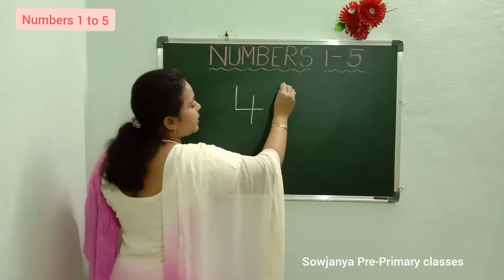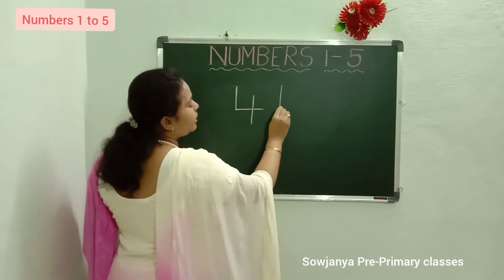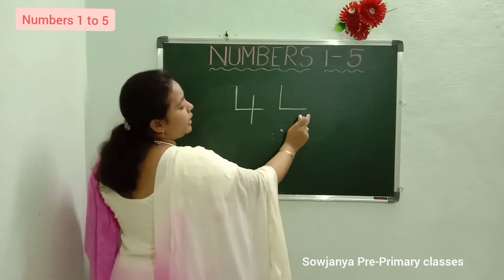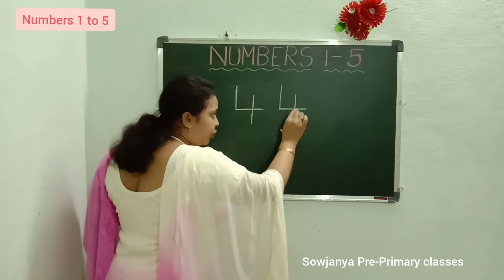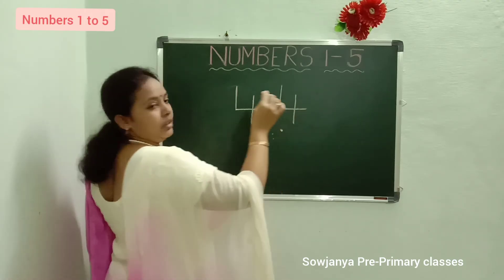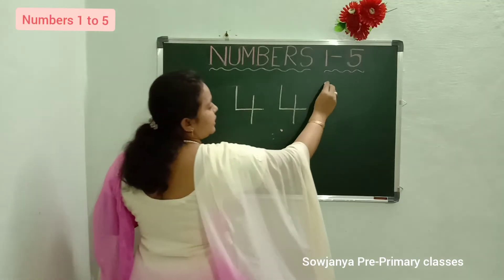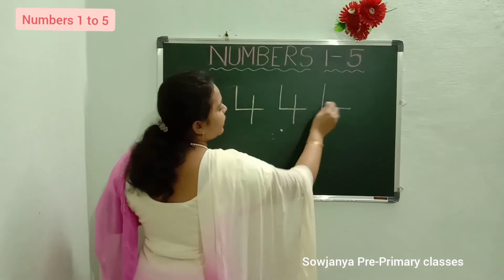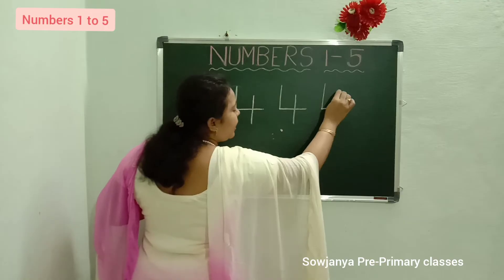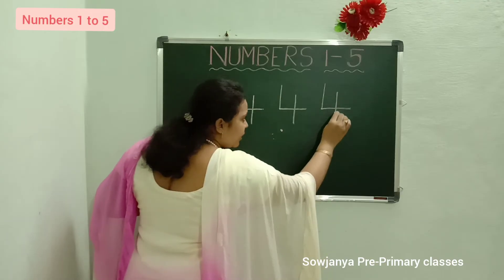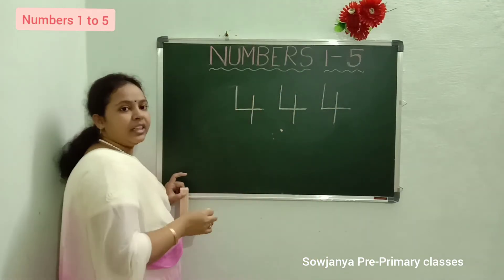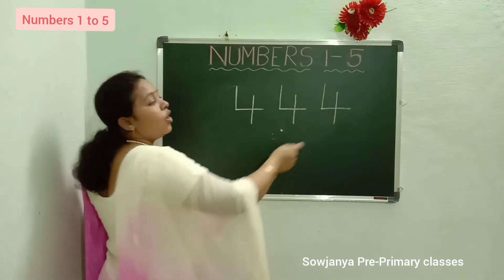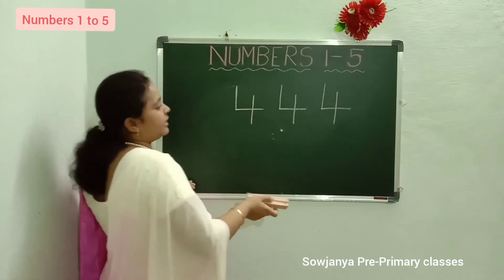Again we will write. Standing line, sleeping line. In the middle of the sleeping line, write 4. Okay children? Standing line, sleeping line. In the middle of the sleeping line, write 4. Again standing line. 4. What is this number? 4. Yes.